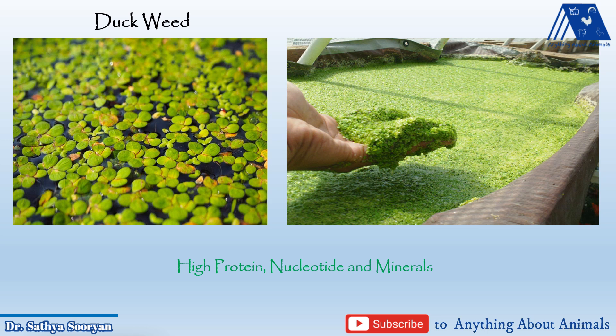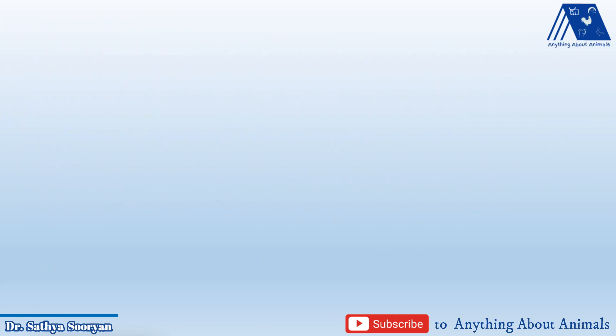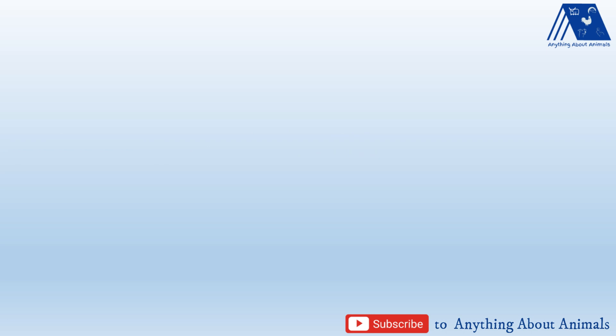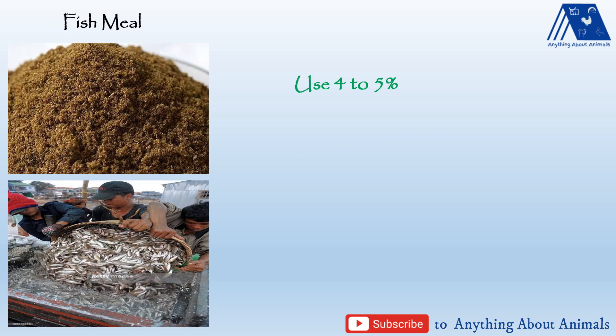Now let us see animal protein sources which we can use instead of soybean meal. There are many already quite famous in the poultry industry, like fish meal and meat and bone meal. Fish meal can be used up to four to five percent, and this is very much limited. When using fish meal in higher quantity, some kind of flavor or smell is reflected in the meat or egg of the poultry. It is also advised to use an antioxidant when using fish meal in feed, because fish meal has high oil content.